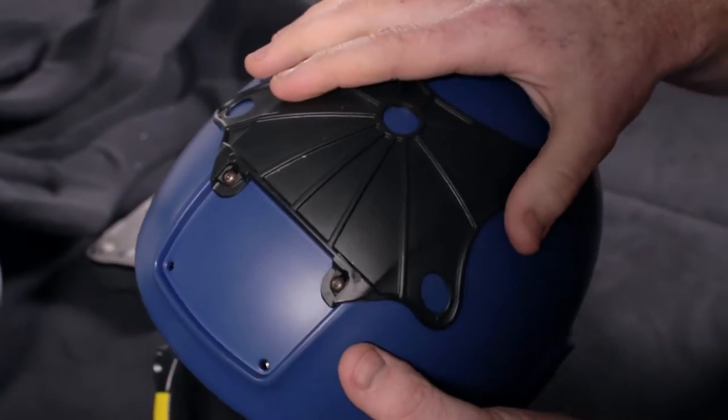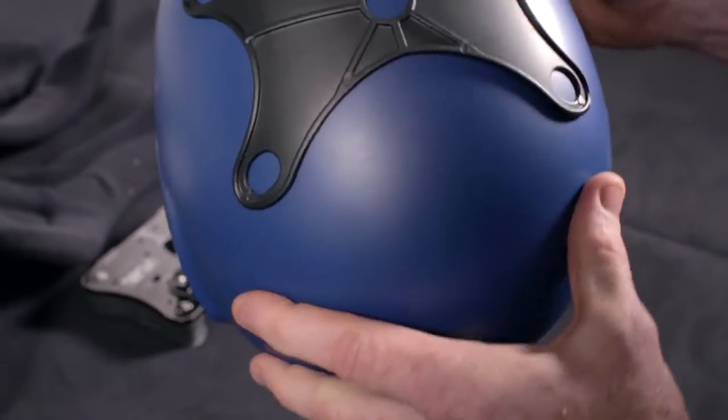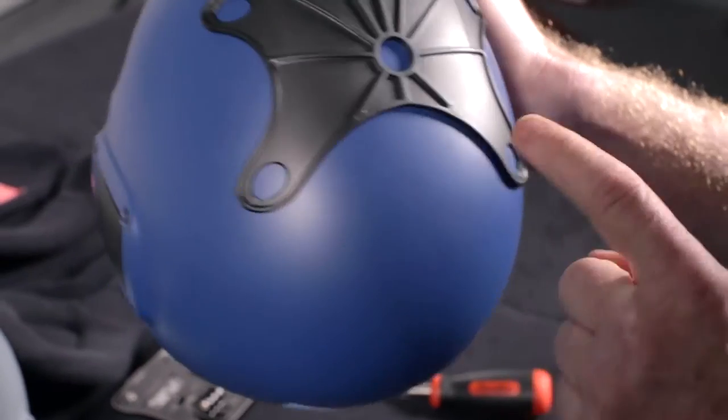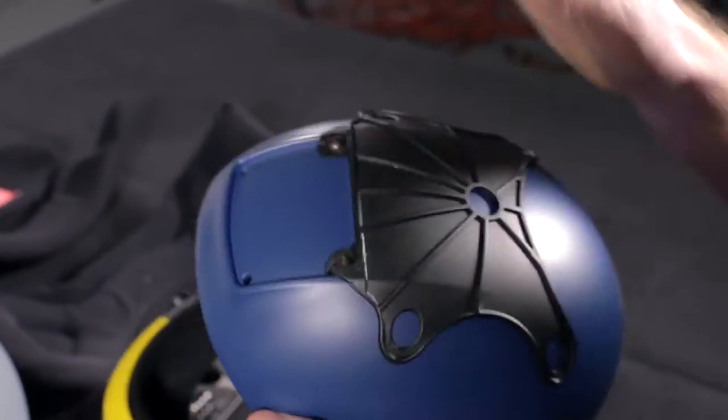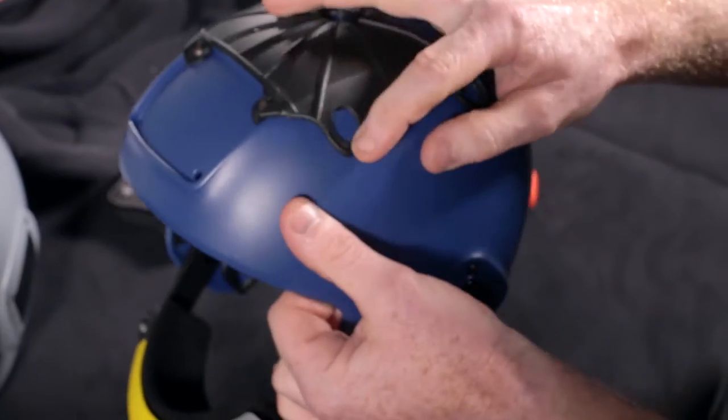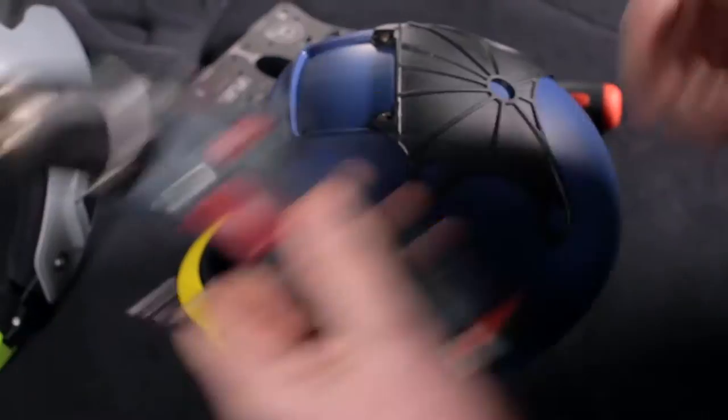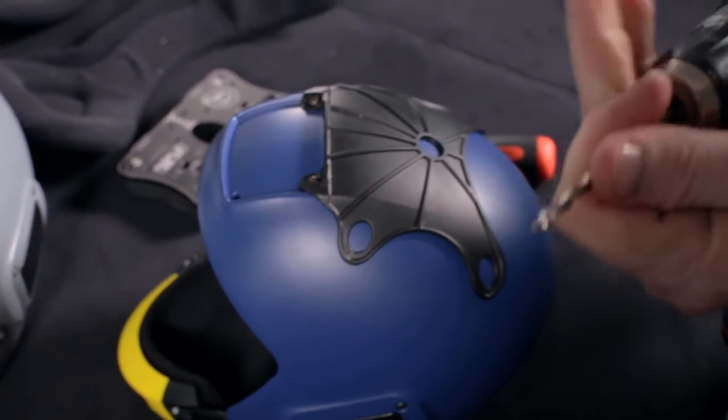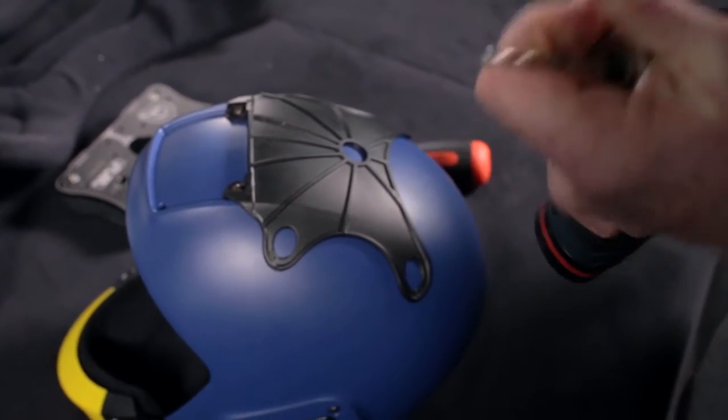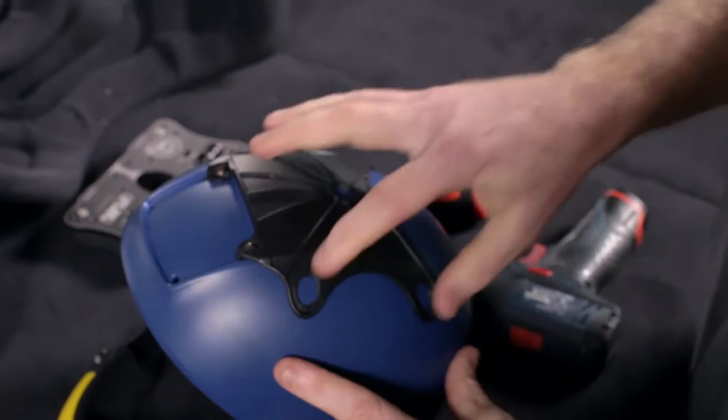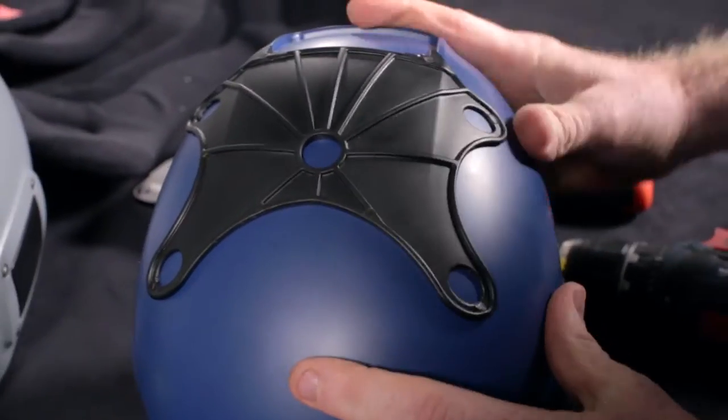Once you've got the drill jig attached to your Fuel helmet, you'll notice that it's easy to see where these four holes need to be. The drill jig also acts to protect the holes or your helmet around the edge of that hole. Using the small or three mil drill, what you need to do is just create a pilot hole in the center of each of these four slots.